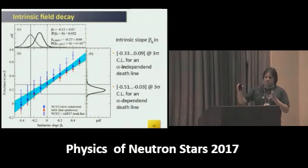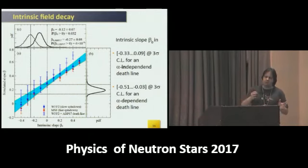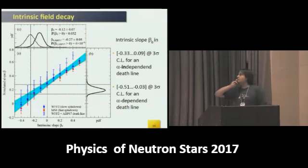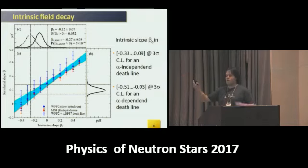This is another numerical result. We remade population synthesis assuming various values of intrinsic slope beta zero and calculated the simulated slope we tried to explain from our observations. This is the observed slope, the observed posterior distribution, and this is the reconstructed intrinsic slope for alpha-independent and alpha-dependent death-line.